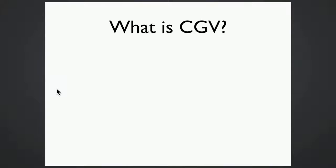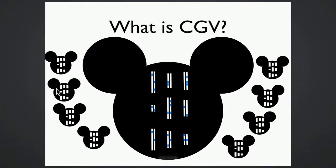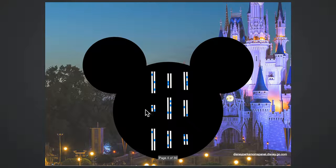I'd like to start off by defining what cryptic genetic variation is, or CGV for short. Let's consider this population of hypothetical animals, which are probably endemic to the Orlando area. In particular, let's consider this individual in the middle with this genome. I've highlighted here in blue the standing variation in this genome, which under normal circumstances doesn't do anything in terms of the phenotype of the organism.